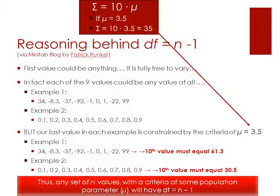And again, this comes into play because we're testing a population mean. So in example number one, the tenth value must equal 61.3. It has to be 61.3 or the variables will not sum up to our required amount of 35. Similarly, in example two, the tenth value must equal 30.5. It has to equal 30.5 if the total value of all of the samples is going to meet our criteria of 35.